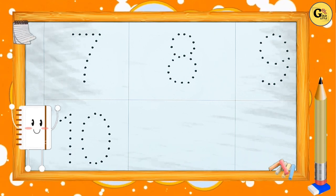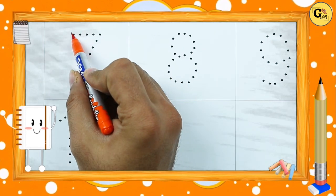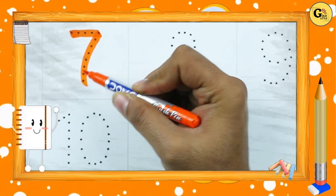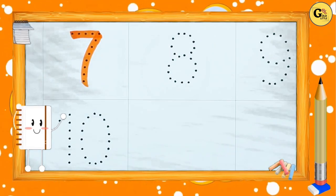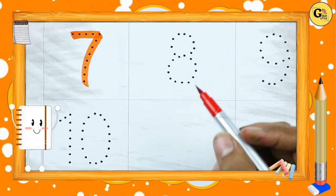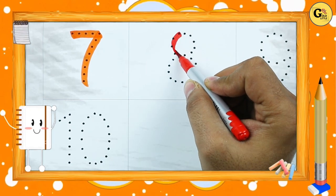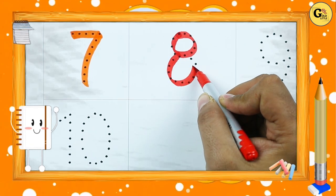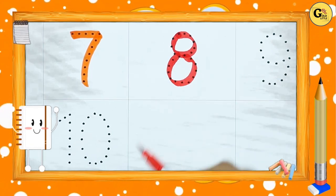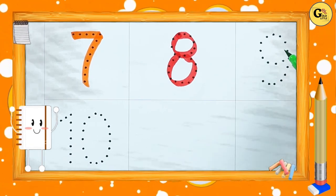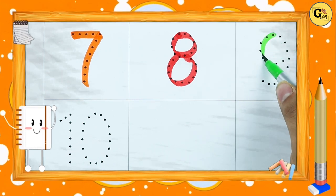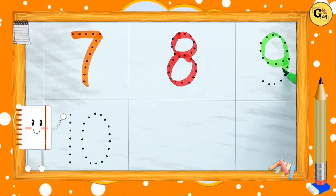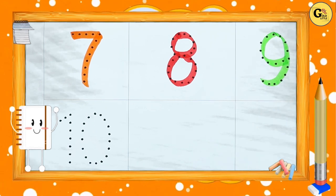Number 7 with orange color — it's number 7. Number 8 with red color — it's number 8. Number 9 with green color — it's number 9.